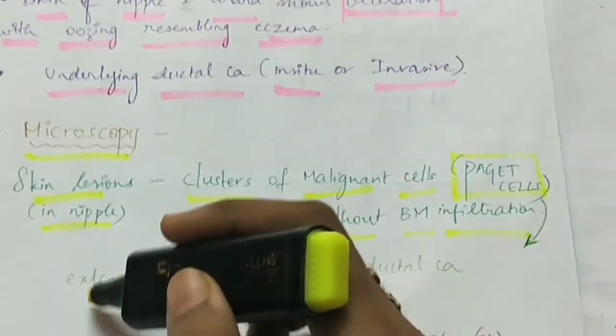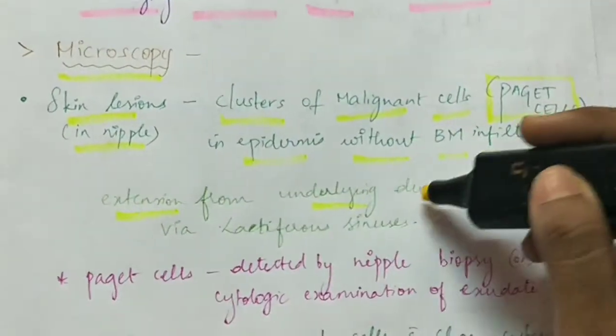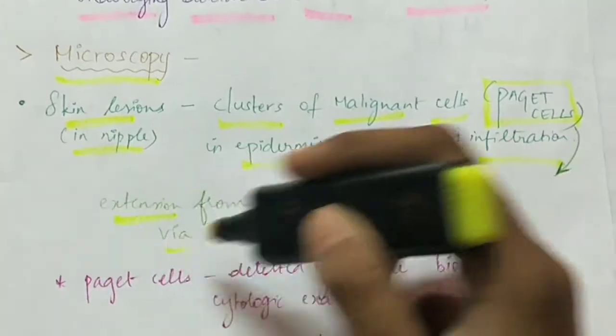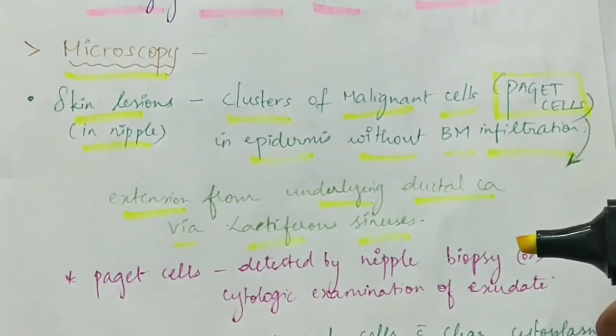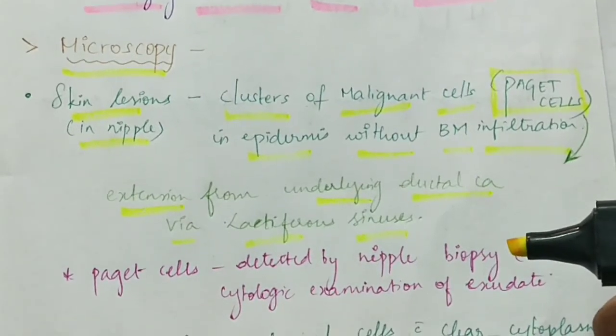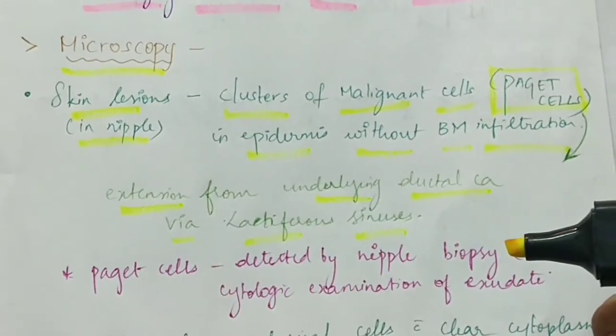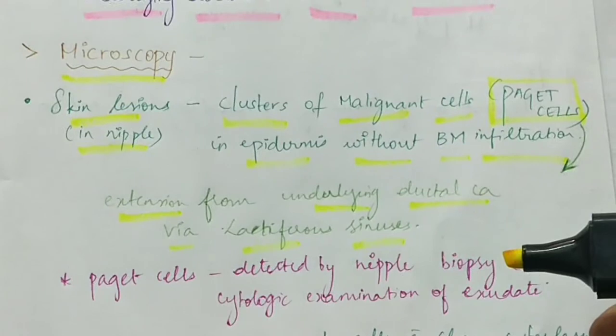These Paget's cells are extension from the underlying ductal carcinoma via the lactiferous sinuses. From the ductal carcinoma which is underlying the breast, the Paget's cells extend via the lactiferous sinus into the nipple.